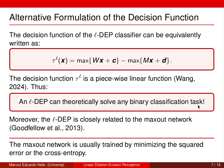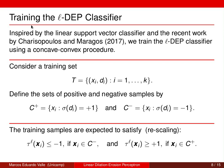Moreover, the L-DEP is closely related to the maxout network by Goodfellow et al. As with a traditional linear network, the maxout network is usually trained by minimizing the squared error or the cross-entropy. In this talk, we propose a new training procedure for the L-DEP classifier: inspired by the linear support vector classifier and recent work by Charisopoulos and Maragos, we train the L-DEP using a concave-convex procedure.